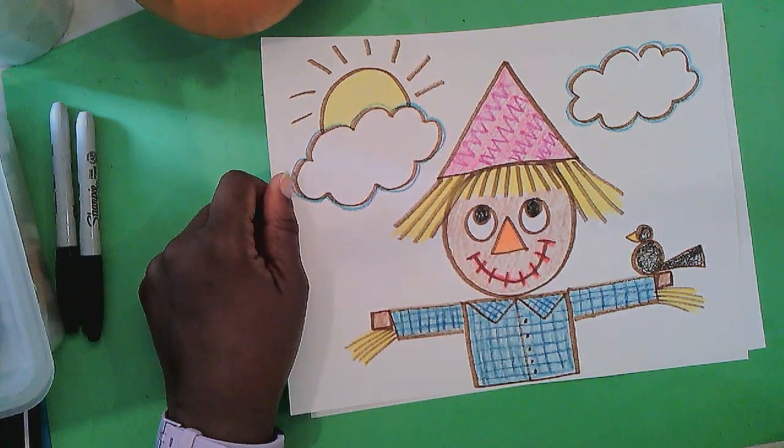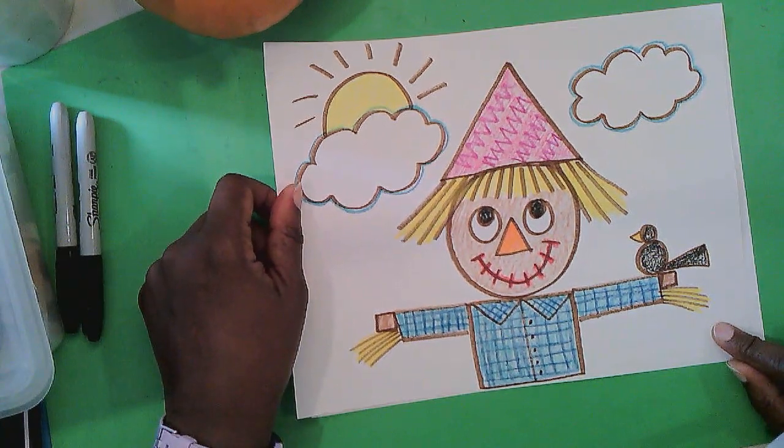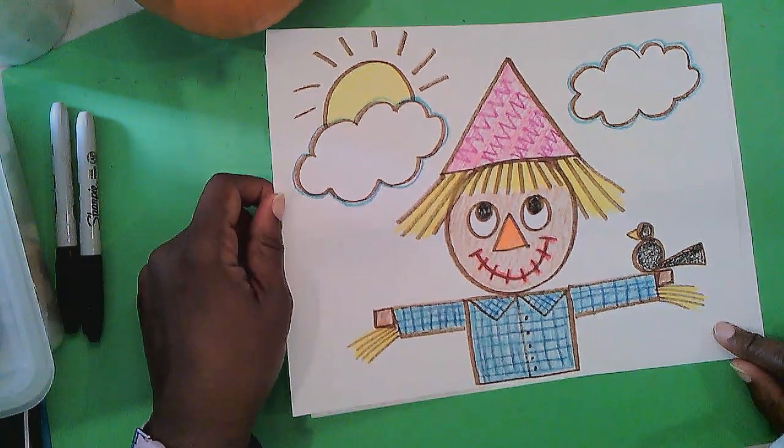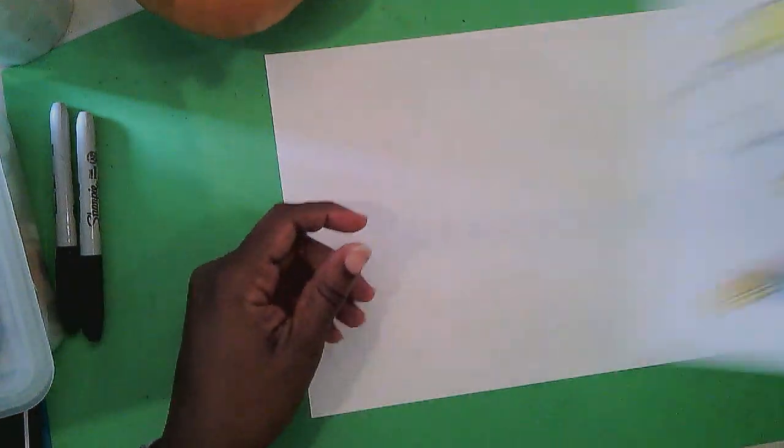We have been talking about different kinds of lines. We have been talking about shapes. So let's use what you know and make a scarecrow. I love it when I rhyme.